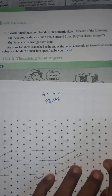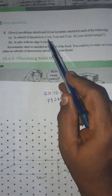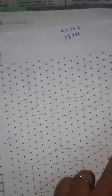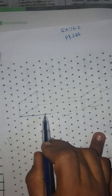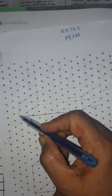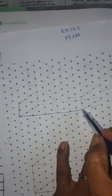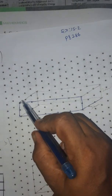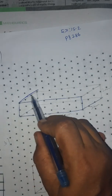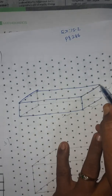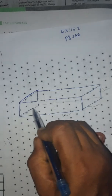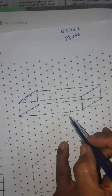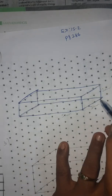We will draw the cuboid of dimensions 5cm, 3cm, and 2cm — first isometric, then we will go for the oblique sketch. Count 1, 2, 3, 4, 5 for the length. Breadth: 1, 2, 3. Complete the side rectangle first, then join like this, then join this one, then join like this. This gives us 5cm length, 3cm breadth, and 2cm height.